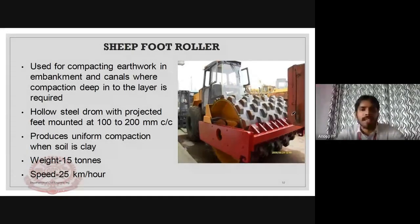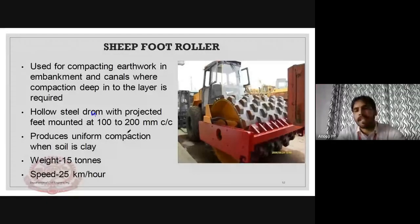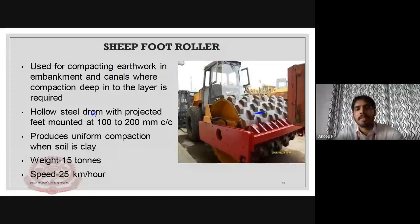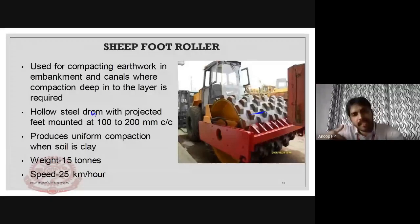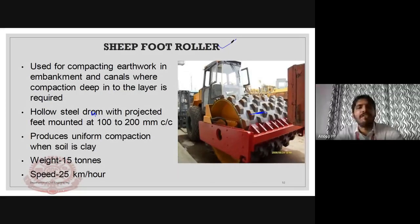The sheep foot roller is not a plain steel drum — it is a drum with projected feet mounted at 100 to 200 mm center to center spacing, that is 10 to 20 centimeter spacing. It produces uniform compaction when the soil is clay. The sheep foot roller is best suited for clayey soil.